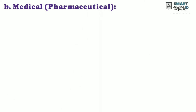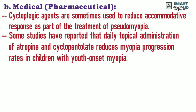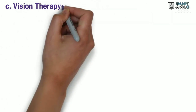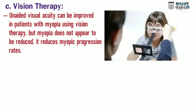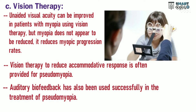B. Medical or pharmaceutical management: cycloplegic agents are sometimes used to reduce accommodative response as part of the treatment of pseudomyopia. Some studies have reported that daily topical administration of atropine and cyclopentolate reduce myopia progression rates in children with youth onset myopia. Problems associated with cycloplegic agents are: risk associated with chronic cycloplegia, light sensitivity due to pupillary dilation, high plus lens additions, and potential adverse effects.